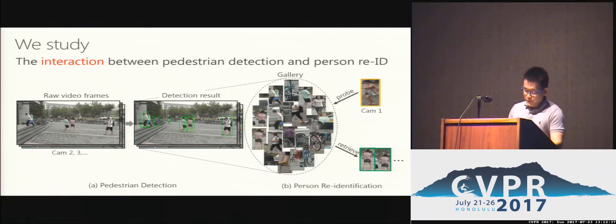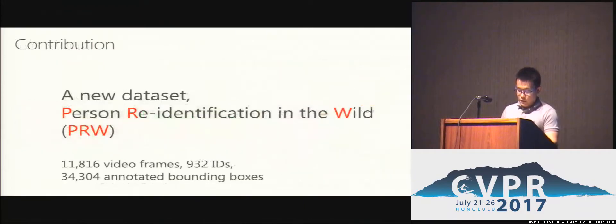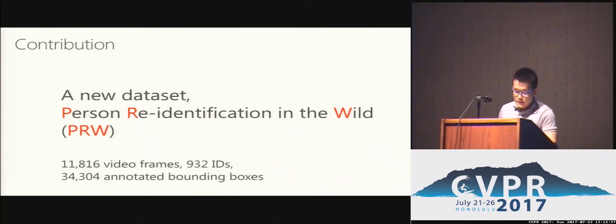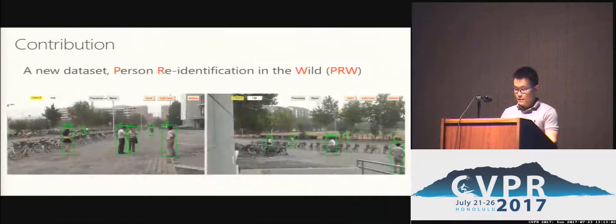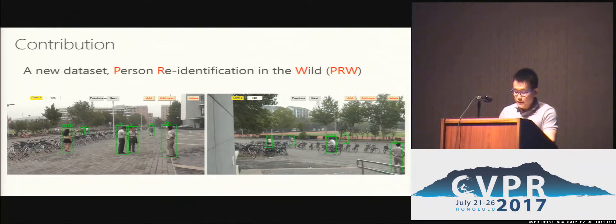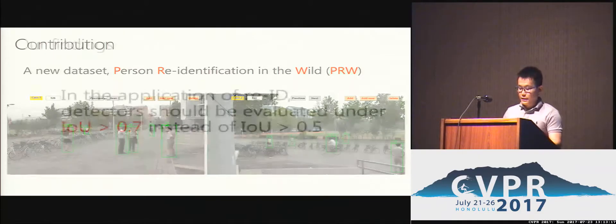The first contribution of our paper is a new dataset called PRW. It consists of over 11,000 video frames with over 900 different identities. We have annotated all the bounding boxes in these frames, so there are more than 34,000 labeled bounding boxes in total. This is our annotation interface. In each frame, the bounding boxes label every pedestrian with a unique ID. If someone's ID is not sure, we assign minus 2, and this ID will not be evaluated in re-ID, but is still used in pedestrian detection.